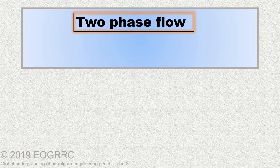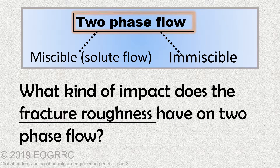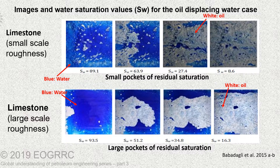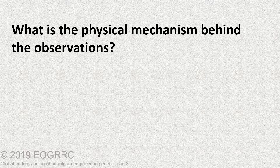The two-phase flow includes: one, miscible flow; and two, immiscible flow. As can be seen in two-phase fracture flow experiments done with limestone at different roughness scales, with higher roughness, residual saturation remains in larger pockets. Not only that, fracture roughness can also affect the residual oil saturation. The previously observed deviation in relative permeability curves is because of channeling.